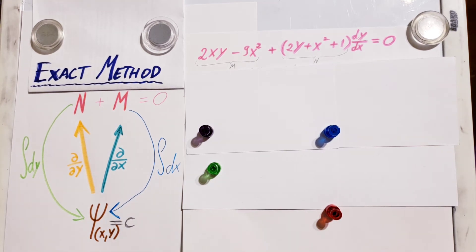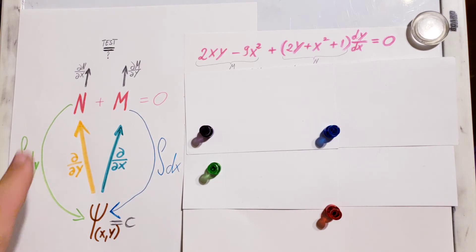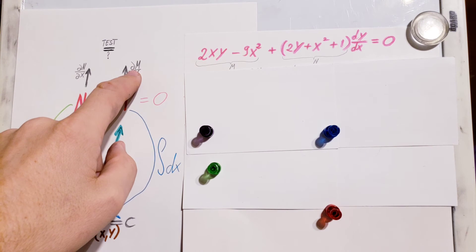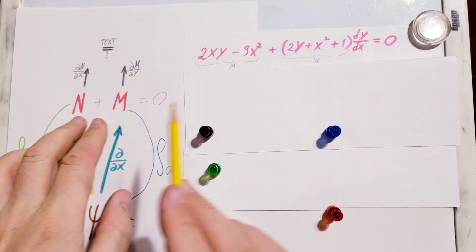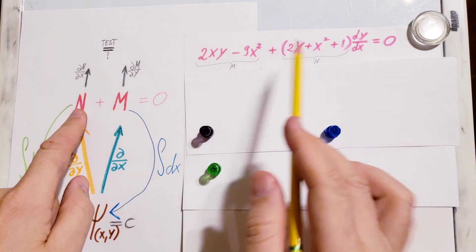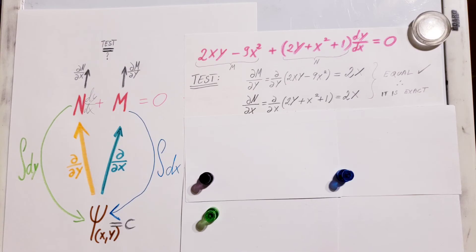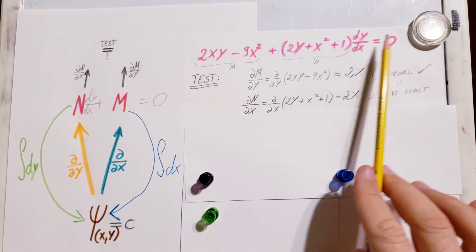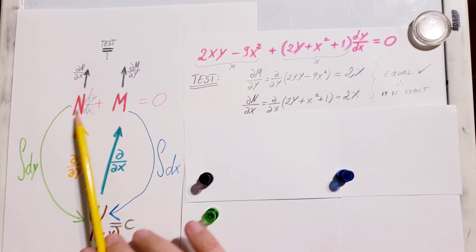We have to run a test on this function before we can be sure that this method can be used. The test is: we're going to take a partial with respect to x of N, and a partial of M with respect to y. My N is the term in front of dy/dx. If our test says yes, then we can proceed solving the problem with the exact method.